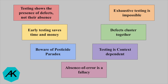Let us recap the seven principles of software testing. First: testing shows the presence of a defect, not their absence. Second: exhaustive testing is impossible. Third: early testing saves time and money. Fourth: defects cluster together. Fifth: beware of the pesticide paradox. Sixth: testing is context dependent. Seventh: absence of an error is a fallacy.